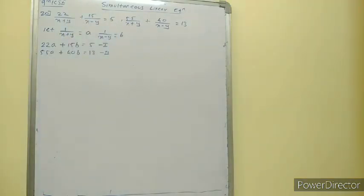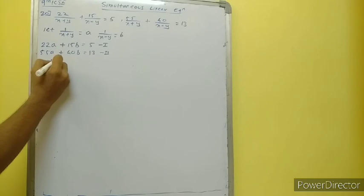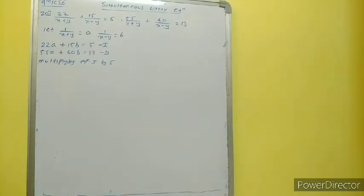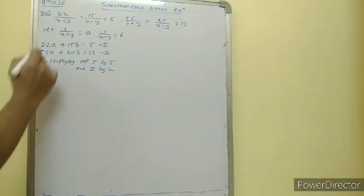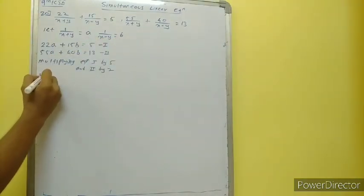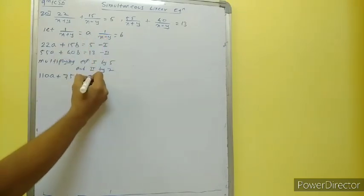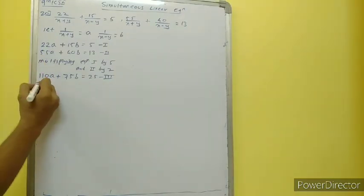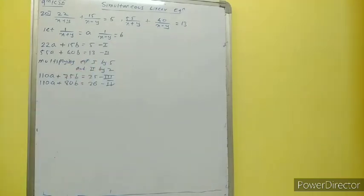If we look at these two equations, our main task is to bring the same coefficient. To bring the same coefficient, I will multiply equation number 1 by 5 and equation 2 by 2. Multiplying equation 1 by 5: 22 fives are 110, 15 fives are 75, and 5 fives are 25 — that is a new equation. Multiplying equation 2 by 2: 55 twos are 110, 40 twos are 80, and 13 twos are 26 — that is the fourth equation.